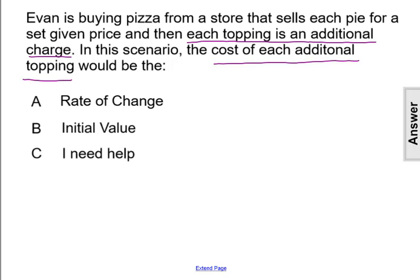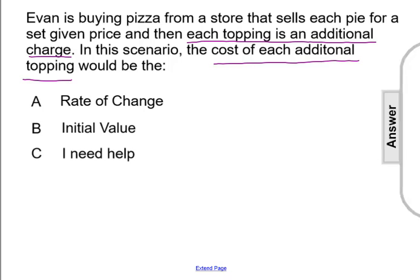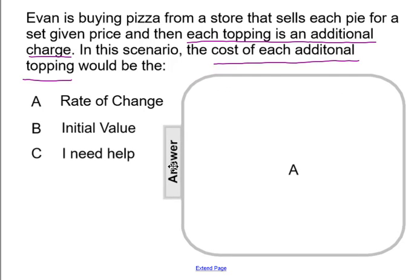If we're looking at the value that's changing the final value by a certain amount depending on how many of something you have, that's considered the rate of change.